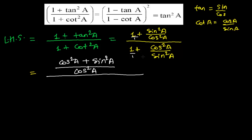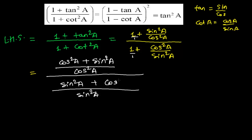And again for the denominator, the LCM of 1 and sin square a will be sin square a. When 1 divides sin square a we get sin square a, and that result multiplies 1 to give sin square a. Again, sin square a divides sin square a to give 1, and 1 multiplies cos square a to give cos square a. So we now have cos square a plus sin square a in the numerator.